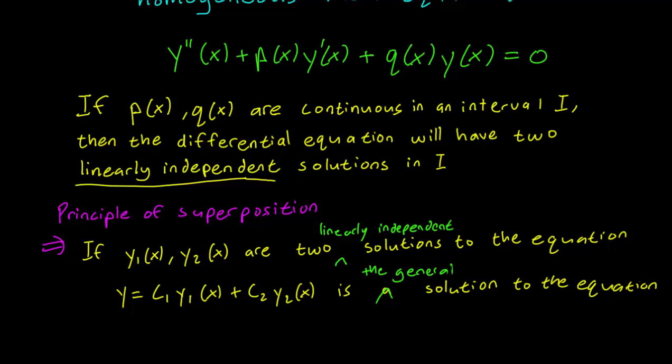So remember that the principle of superposition works regardless of whether your two solutions are linearly independent or not. But for c1*y1 plus c2*y2 to be the general solution, you do need y1 and y2 to be linearly independent.